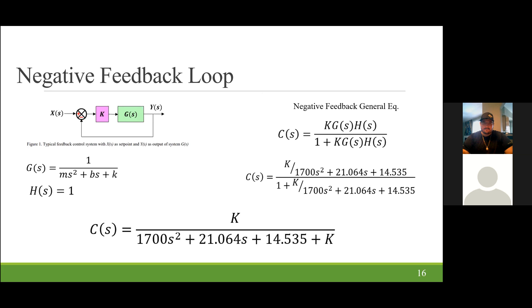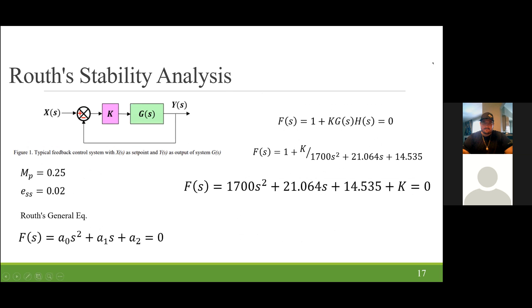From our negative feedback loop, we plug into Routh stability. Routh stability analysis is ideal for many reasons. Primarily, it achieves a maximum overshoot of 25% and a steady state error of 2%. The function for Routh stability is basically the denominator of the negative feedback loop that we calculated. So f of s is going to equal 1 plus k g of s, h of s, and set it equal to 0. Plugging in our values for g of s, h of s, and k, we achieve a final Routh stability function f of s, which is equal to 1700 s squared plus 21 s plus 14.5 k equals 0.